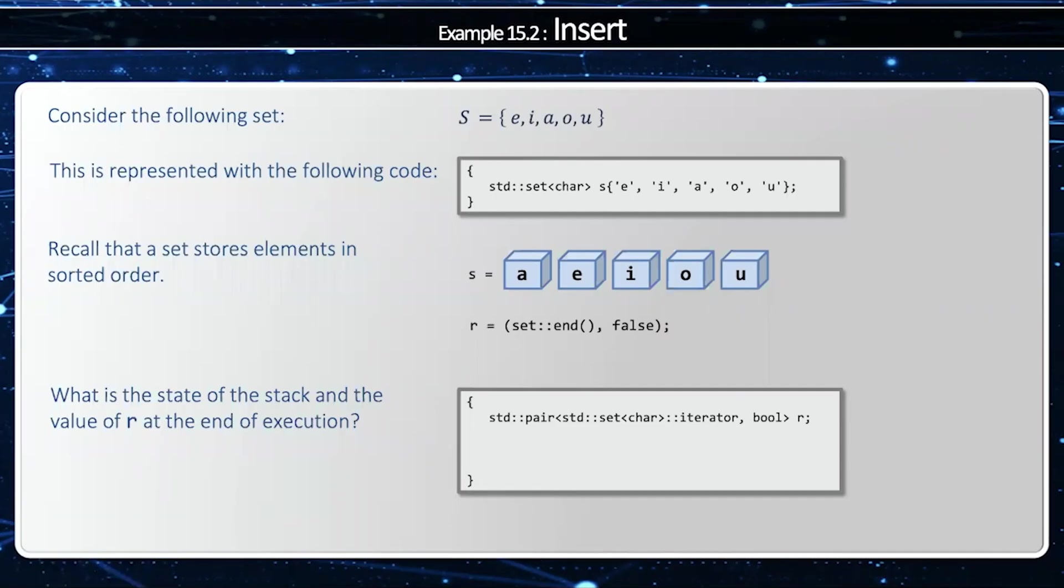Consider the following set: E, I, A, O, and U, which of course are five vowels. Now when I add them to the set, they're always going to be in sorted order because the set stores things in sorted order.